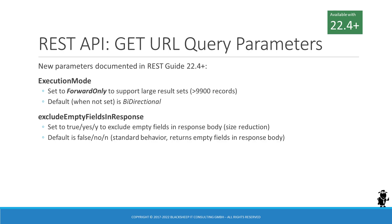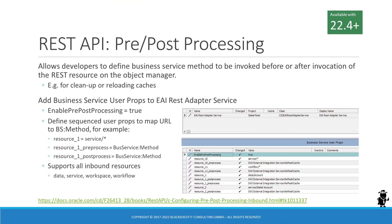The second enhancement for the inbound REST API is the new ability to define a custom or standard business service method to be invoked before (pre) or after (post) the actual request in the EAI object manager. This can prove useful if developers need to make preparations before the request or for cleanup jobs after the request. The new feature is implemented as a series of business service user properties, which one must add to the EAI REST adapter service.